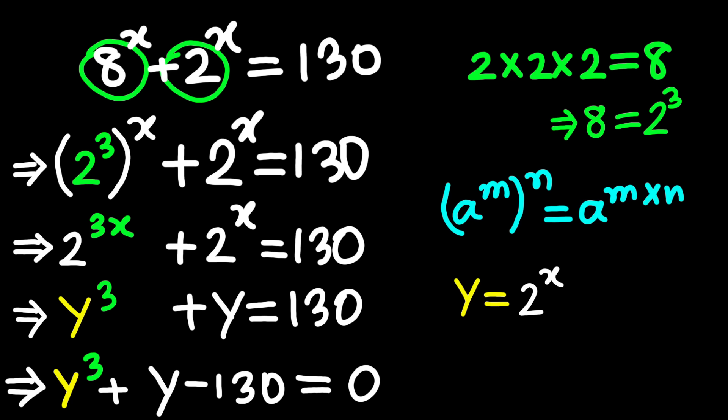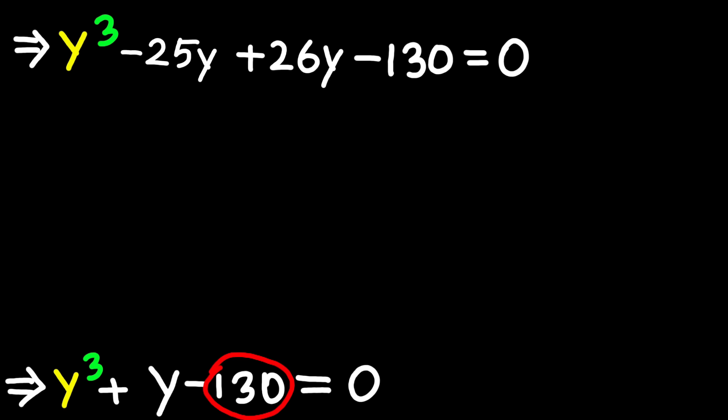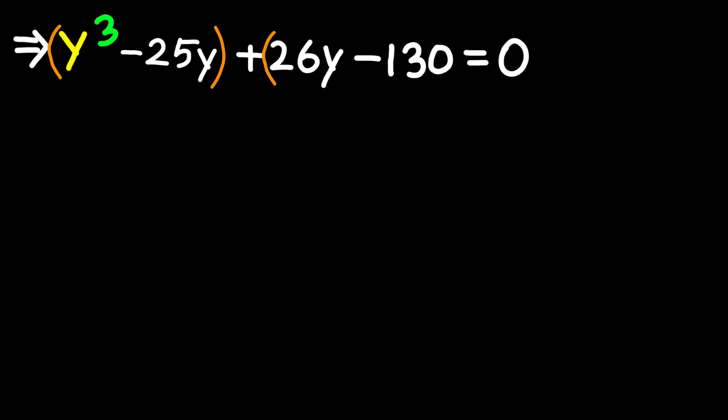Now, with cubics, I usually look at the constant term for clues. 130 can be split as 26 times 5. So we can rewrite this as y cubed minus 25y plus 26y minus 130 equals 0. Let's group them. Parentheses y cubed minus 25y plus 26y minus 130 equals 0.